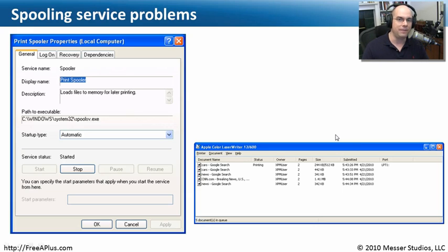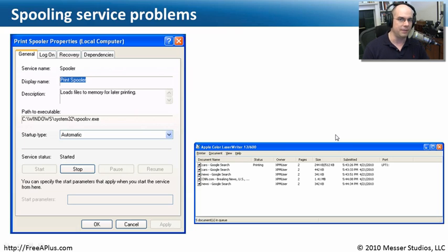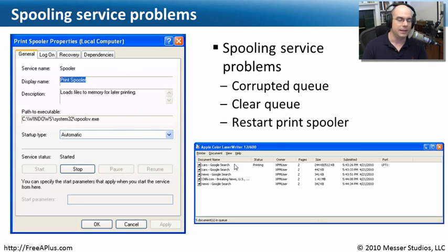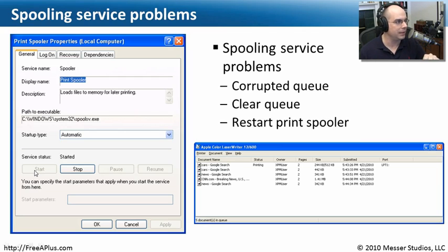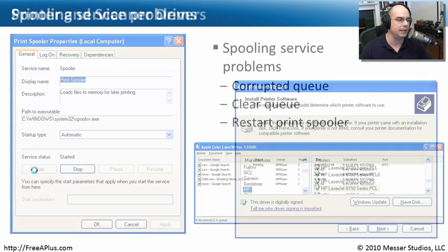Prior to Windows, we didn't have a spooler — when we printed something, we had to wait until it finished before doing anything else. The spooler is really useful, but if it's having problems, it simply won't print. You may have sent jobs to your hard drive with everything queued up, but the queue itself could be corrupted and needs to be cleared and restarted. There's a service called the Print Spooler Service — you can find it under Administrative Tools in Control Panel. You may just be able to stop it and start it again, and everything will begin working. The spooler may be clogged and just needs to be cleared out.